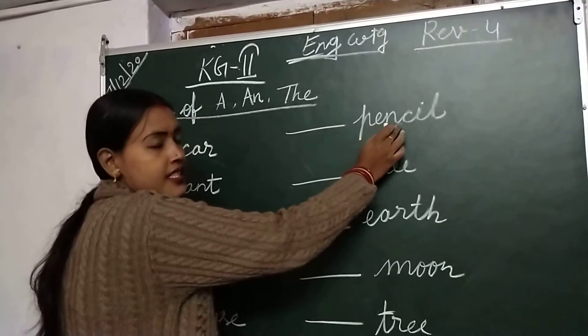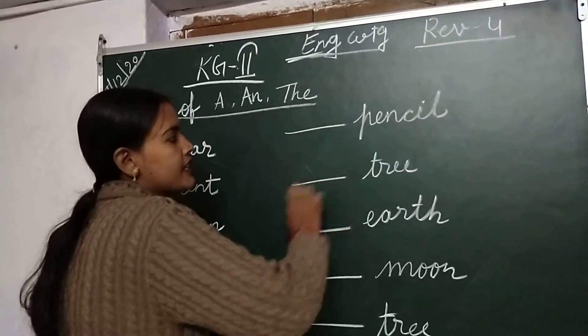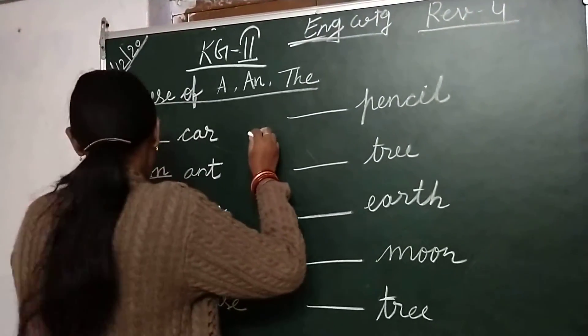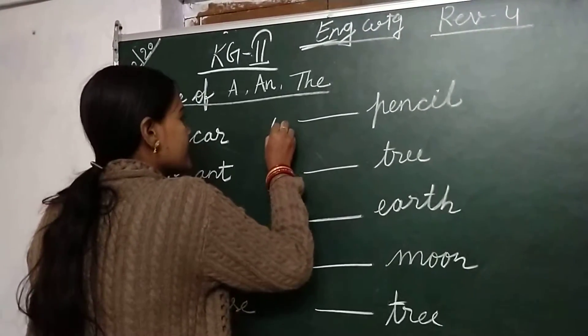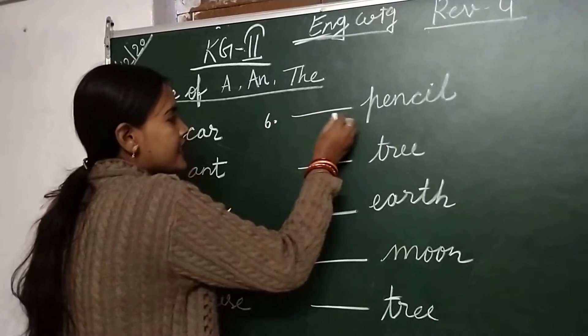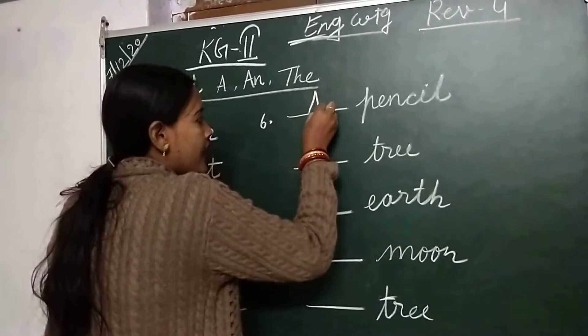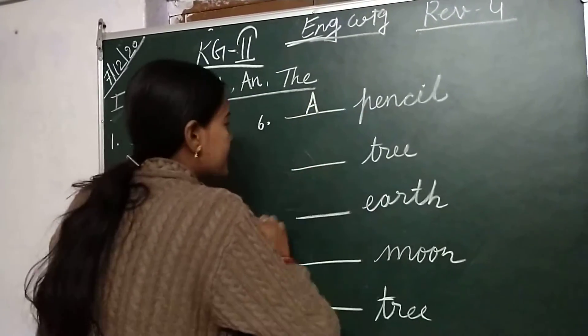Next is pencil. P-E-N-C-I-L, pencil. So children, number 6 is pencil. Write down: a pencil.